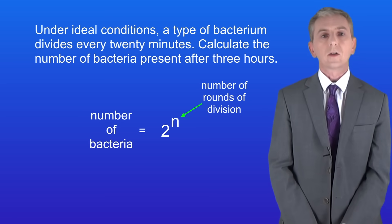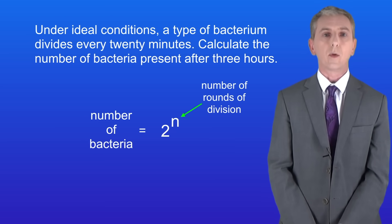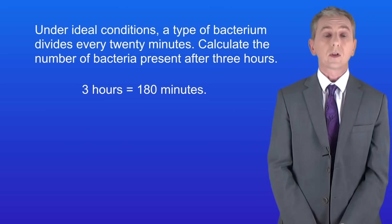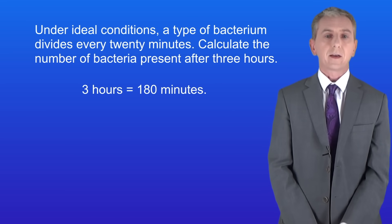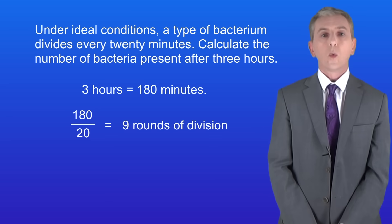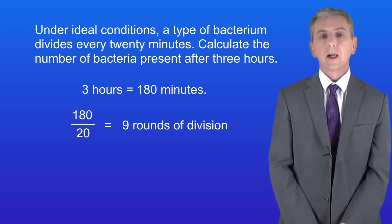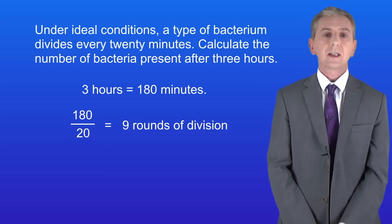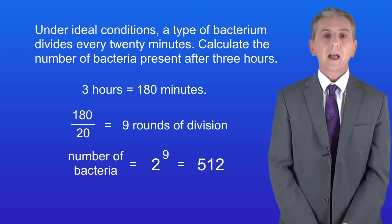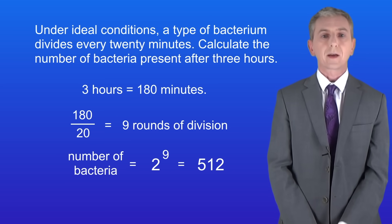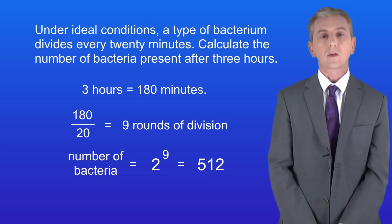First, we need to calculate how many times the bacteria have divided in three hours. Three hours is 180 minutes. The bacteria divide every 20 minutes, so 180 divided by 20 tells us the bacteria underwent nine rounds of division. So the number of bacteria equals 2 to the power of 9, which gives us 512 bacteria present after three hours.